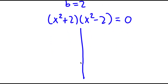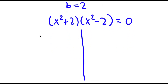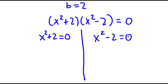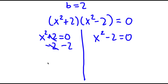This gives me two equations. I have x squared plus 2 is equal to 0, and x squared minus 2 is equal to 0. For x squared plus 2 equals 0, I can subtract 2 on both sides — these two cancel out — and I have x squared is equal to negative 2.